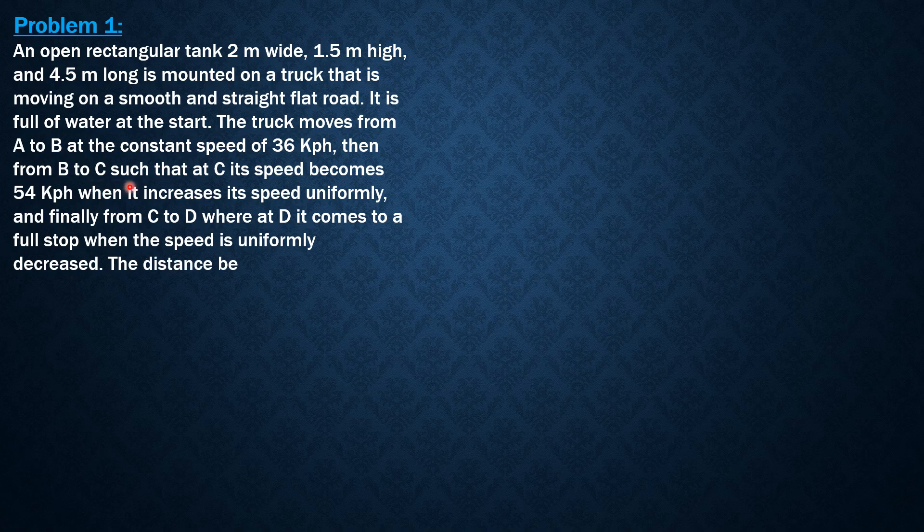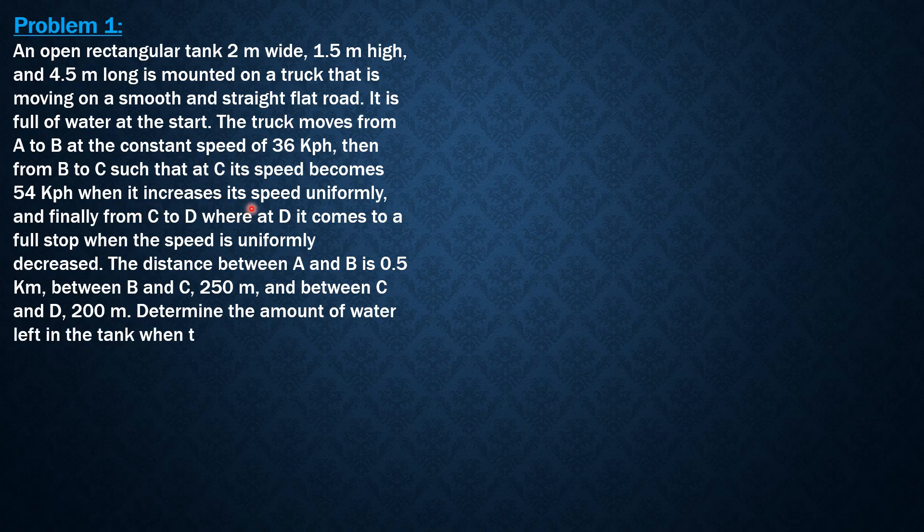The truck moves from A to B at a constant speed of 36 kilometers per hour, then from B to C such that at C its speed becomes 54 kilometers per hour when it increases its speed uniformly, and finally from C to D where at D it comes to a full stop when the speed is uniformly decreased. The distance between A and B is 0.5 kilometer, between B and C 250 meters, and between C and D 200 meters.